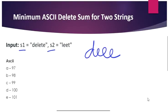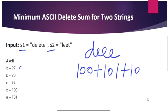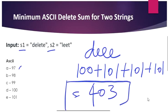The ASCII values of lowercase letters start at 97 and increase. For the four deleted characters, the ASCII codes are 100, 101, 101, and 101, giving a total of 403. This is the output we need to return.